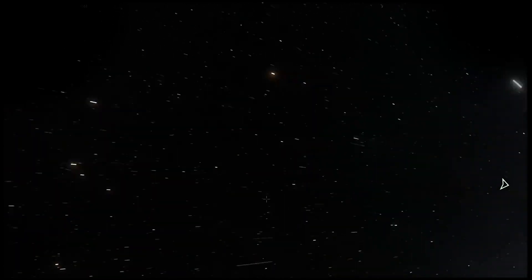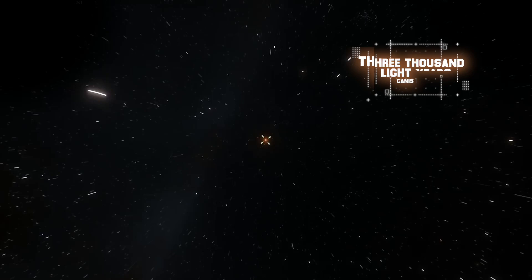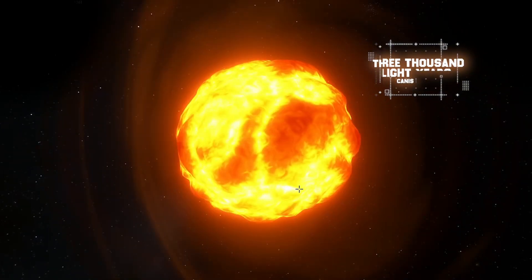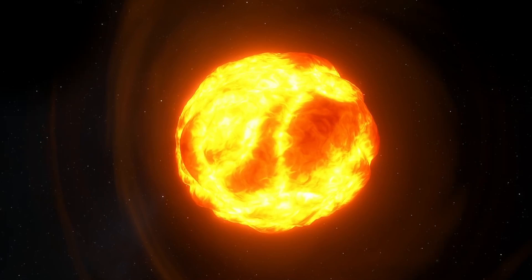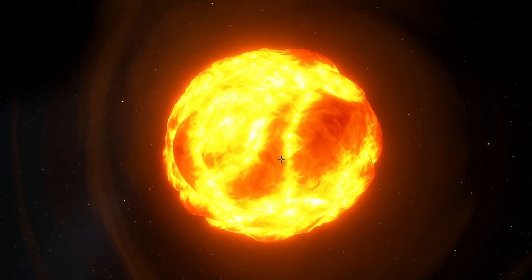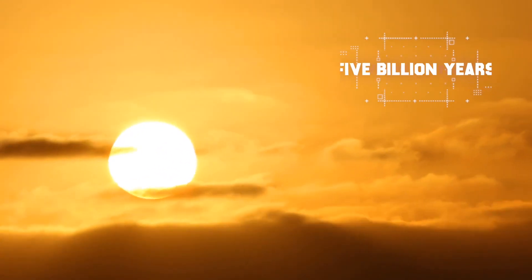Vy Canis Majoris is a massive red hypergiant that sits just over 3,000 light years away from us in the constellation of Canis Major. Red giants are a class of star that has reached the final stage of stellar evolution, a stage that our sun will reach in approximately 5 billion years into the future.